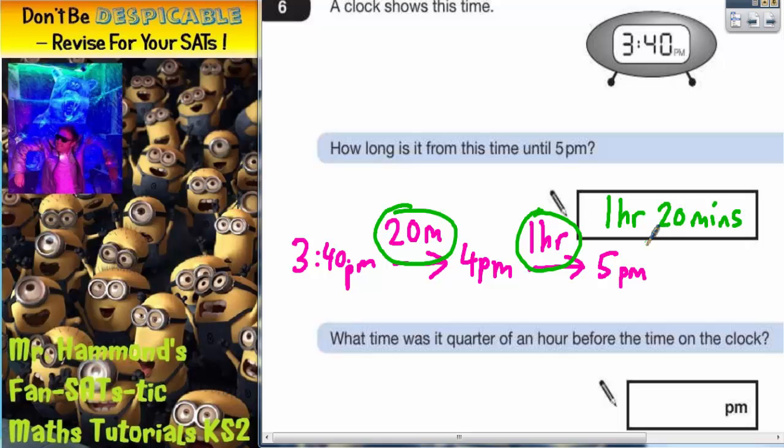The other possible answer they will accept there is if you put a final answer just in minutes. So one hour 20 minutes would also be known as 80 minutes, because one hour is 60 minutes plus an extra 20, 60 plus 20 would give you the 80 minutes.